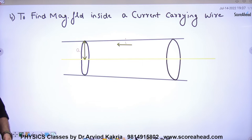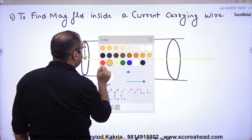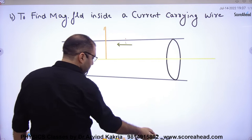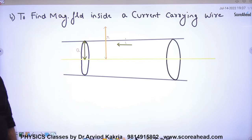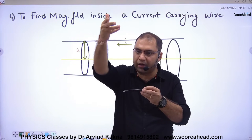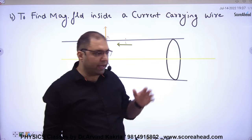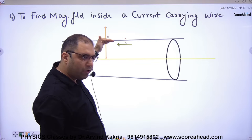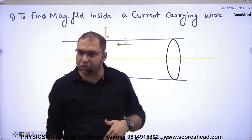I want to find the value of B. Where do I want to find B's value? From the axis, at a distance of small r. I want to find B's value at a distance of small r from the axis of this infinite long wire.